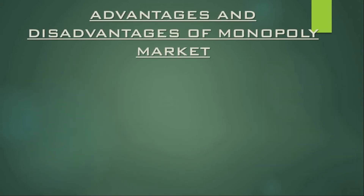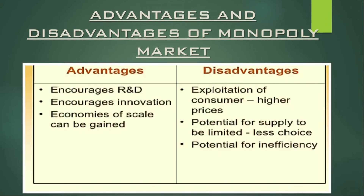Now let us look at the advantages of a monopoly market. The first advantage is increased R&D — research and development. The second is that it encourages innovation. Third, economies of scale can be gained. We know that in perfect competition there are no economies of scale, which is a disadvantage of the perfectly competitive market.